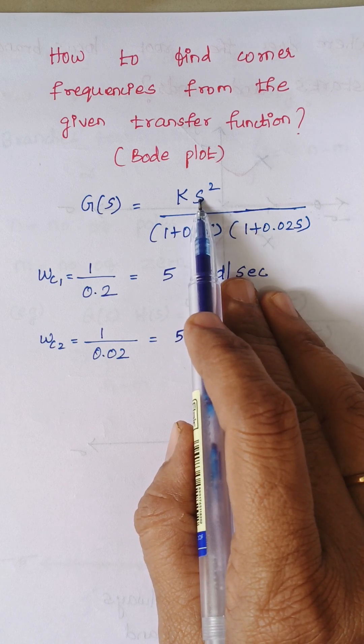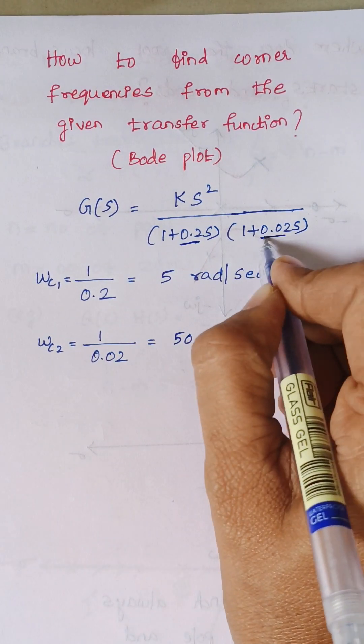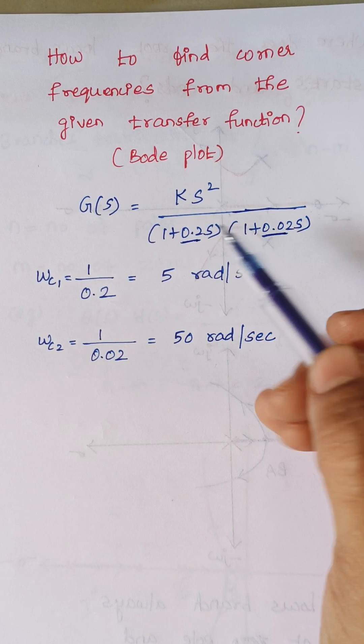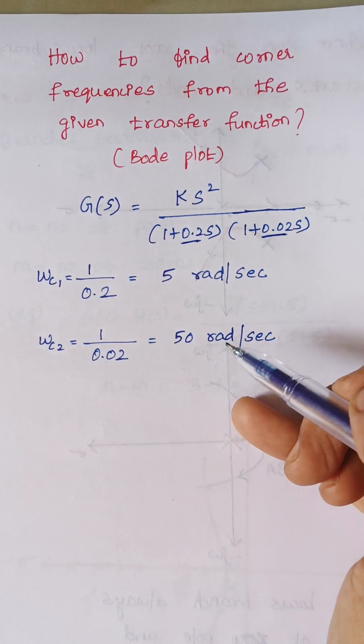So no need to consider this term. Then the next thing is here we are having 1 as 0.2 and another 1 as 0.02. So just take the reciprocal of these values. So 1 by 0.2 is 5 and 1 by 0.02 is 50.